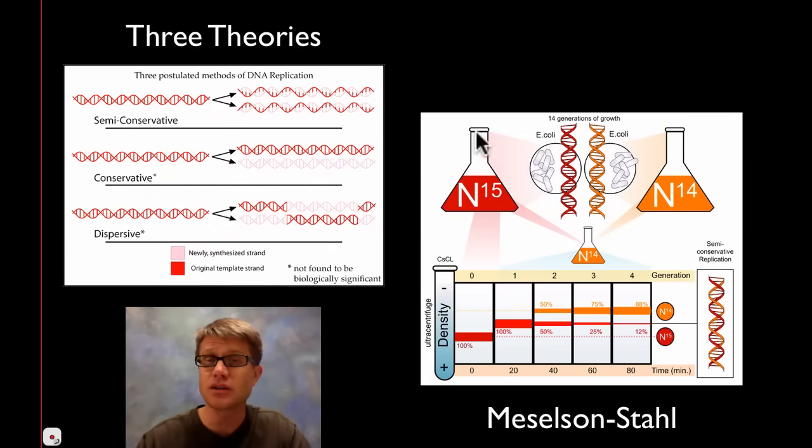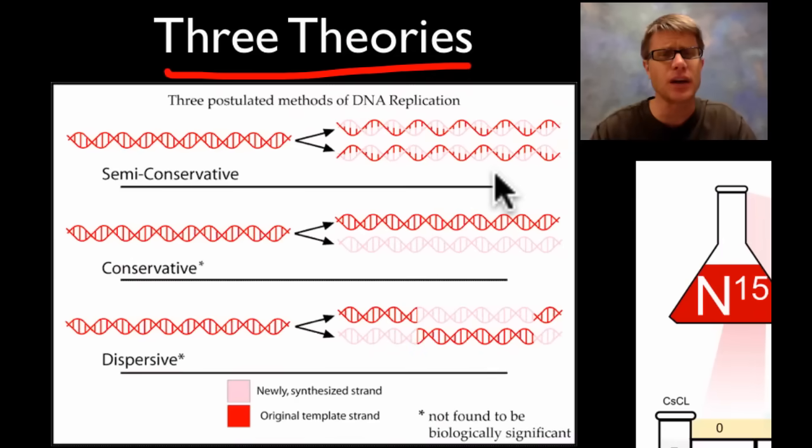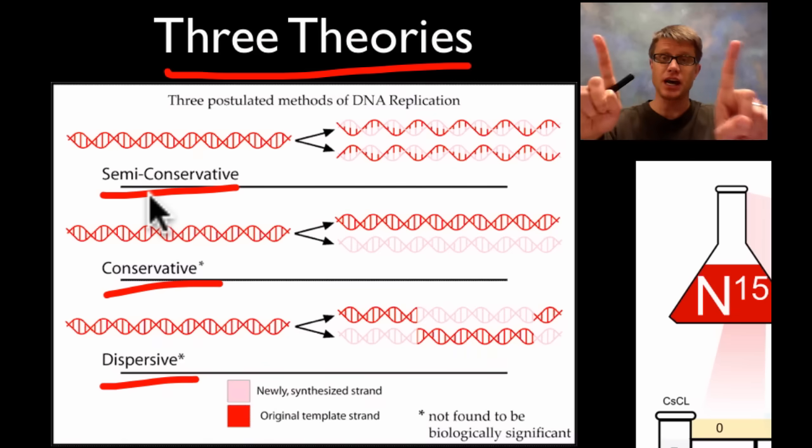And so basically when they figured out the structure of DNA, three theories came about as to how it actually makes copies of itself. The first is semi-conservative, conservative and dispersive. Watson and Crick actually believed in this. They believed that DNA would split in half and then you'd copy new strands on either side.